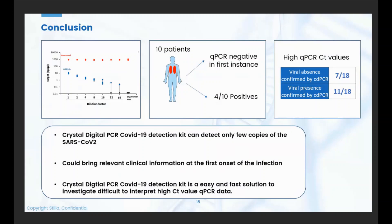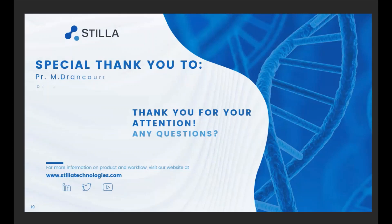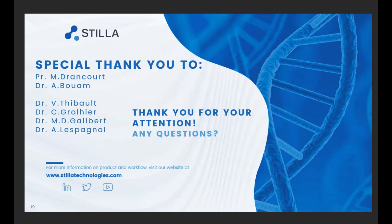To conclude: Crystal Digital PCR COVID-19 detection kit allows detection of only a few copies of SARS-CoV-2. Secondly, it could potentially bring relevant clinical information at the first onset of infection when SARS-CoV-2 charge might still be low. And finally, Crystal Digital PCR COVID-19 detection kit is an easy and fast solution to investigate difficult-to-interpret high-Ct-value qPCR data. I would like to give a special thank you to CHU Rennes and IHU Marseille, and thank you for your time. I'm now happy to answer your questions.